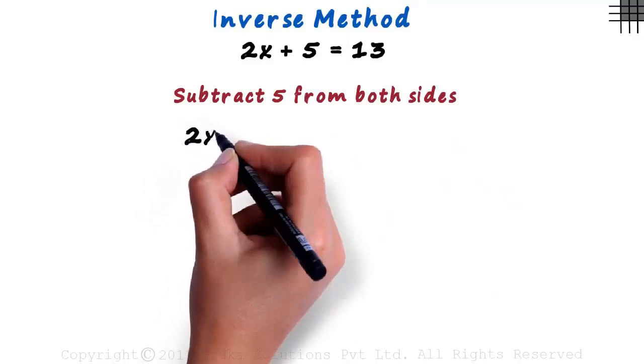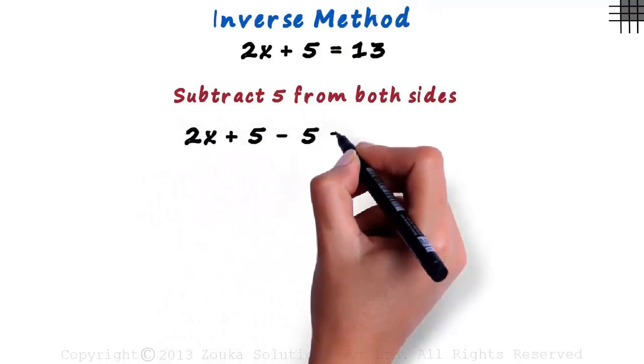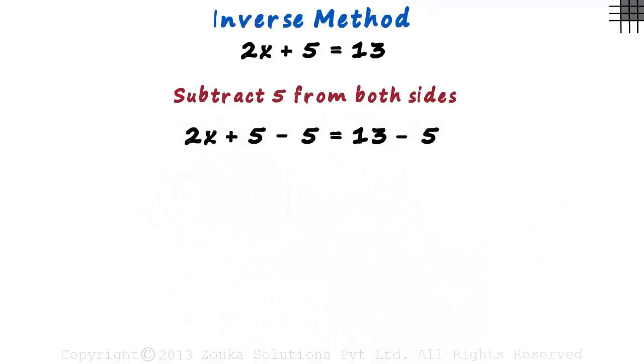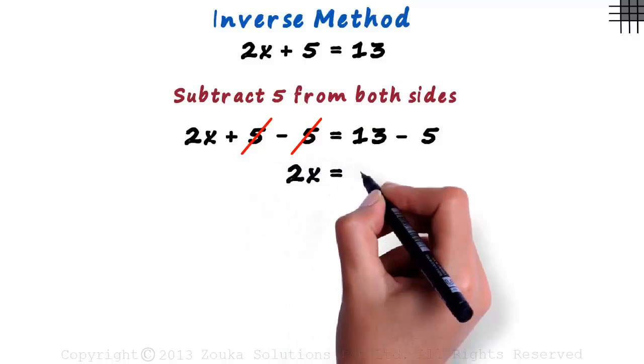We get 2x plus 5 minus 5 equal to 13 minus 5. 5 cancels out on the left-hand side, and the right-hand side equals 8. Hence, our equation reduces to 2x equals 8.